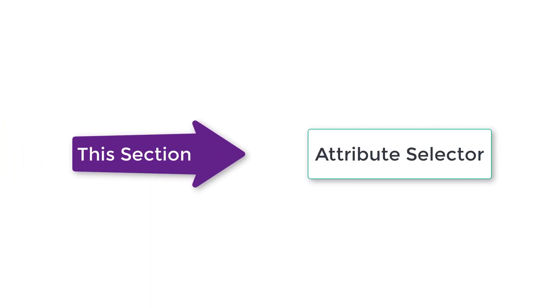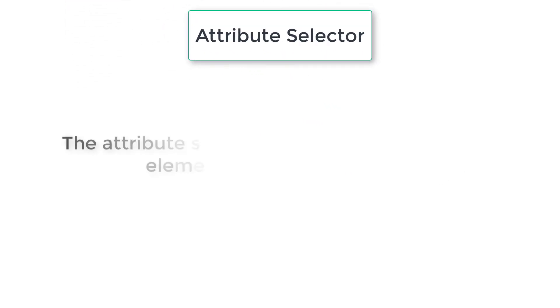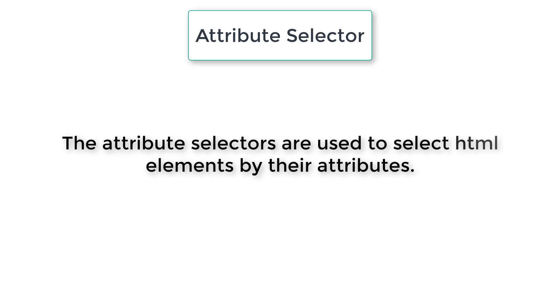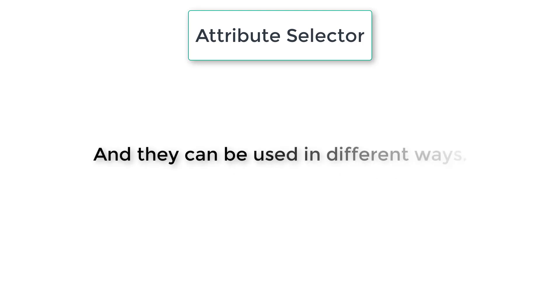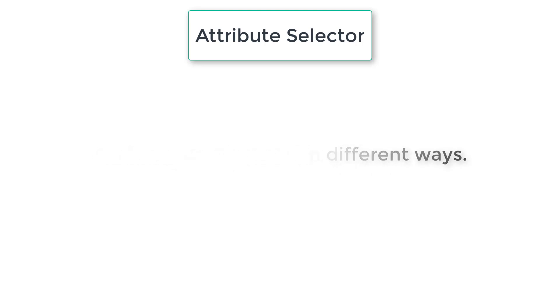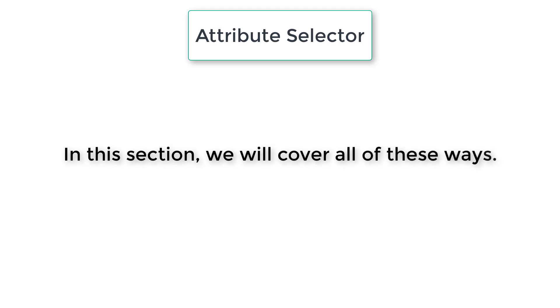In this section we will learn how to use attribute selectors. Attribute selectors are used to select HTML elements by their attributes and they can be used in different ways. In this section we will cover all of these ways.